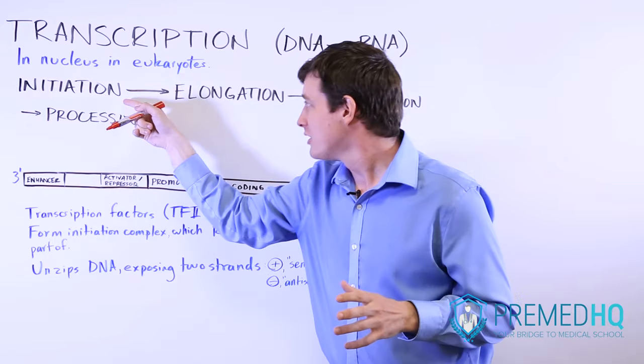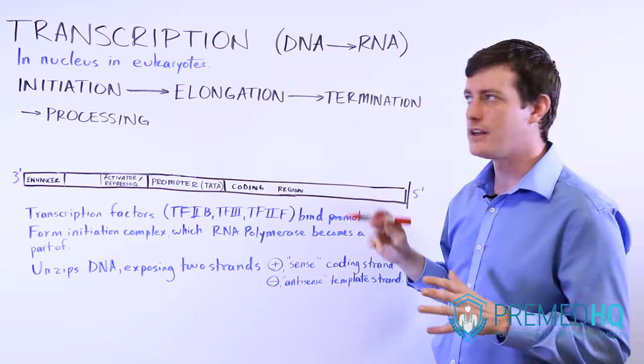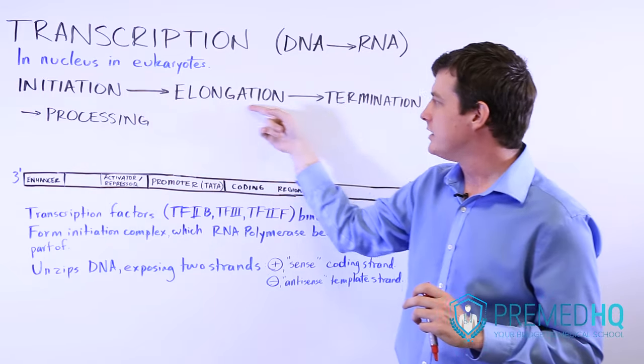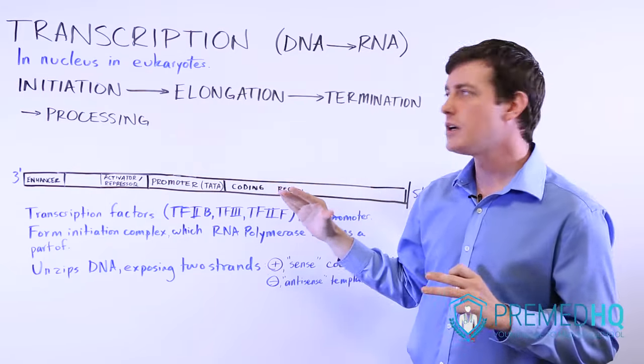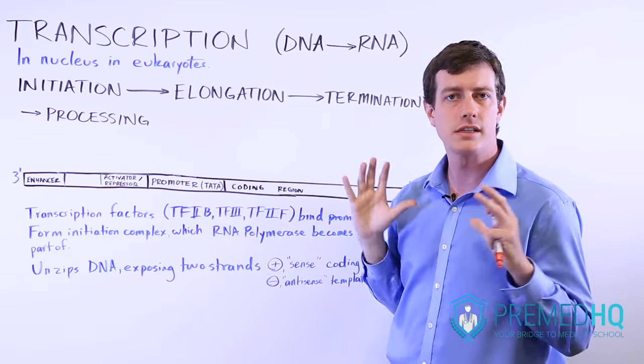An initiation phase, an elongation phase, and finally a termination phase. So how do you start the transcription process? How does it continue and produce this transcript? And then how does it get the signal that the transcription process must end?